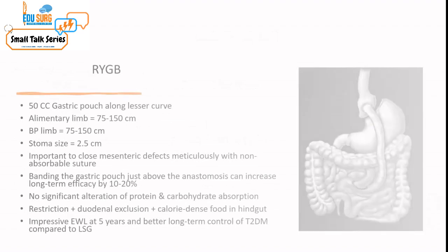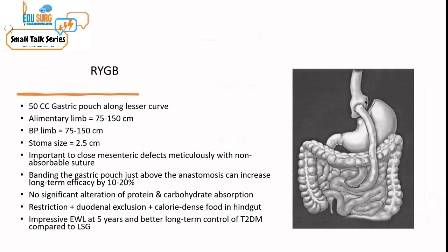For RYGB, a 50 cc gastric pouch is created along the lesser curve. There is an alimentary limb anywhere between 75 to 150 cm, and the biliopancreatic limb also between 75 to 150 cm. The stoma size at the gastrojejunal anastomosis is about 2.5 cm. It is important to close mesenteric defects meticulously with non-absorbable suture. Banding the gastric pouch just above the anastomosis is an option. There is no significant alteration of protein and carbohydrate absorption. The procedure provides restriction, duodenal exclusion, and calorie-dense food entering rapidly into the hindgut, giving all the hindgut effects like release of GLP-1, PYY, etc.